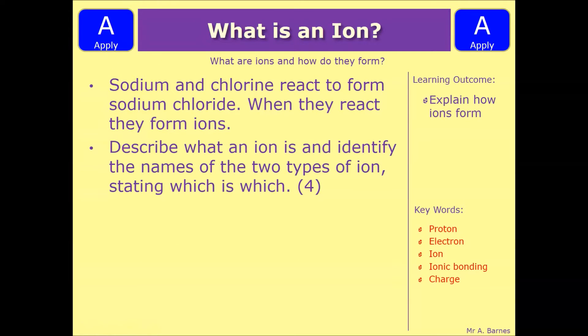Okay, let's have a look at a question then. So this says sodium and chlorine react to form sodium chloride. When they react they form ions. Describe what an ion is and identify the names of the two types of ions stating which is which. So in this case you'll get two marks for the definition of what an ion is, and one mark for which one sodium is and one mark for which one chlorine is. Pause the video, have a go and we'll see how you've done in a minute.